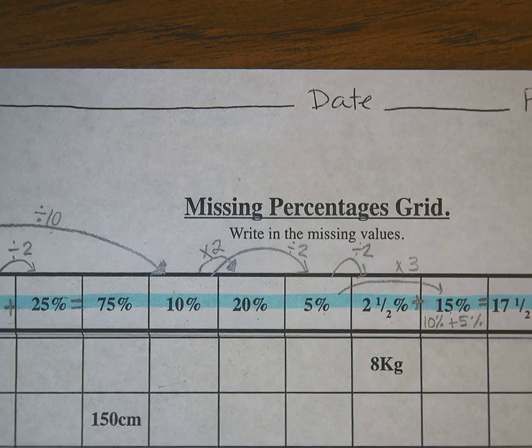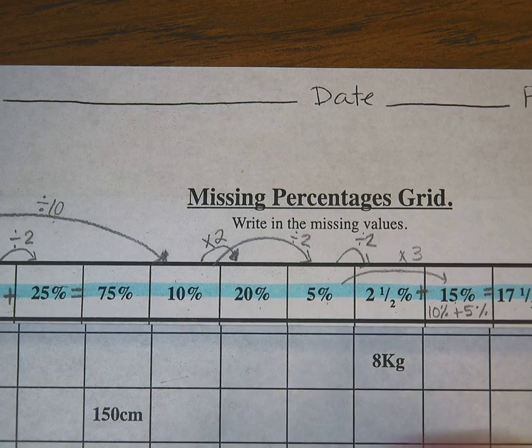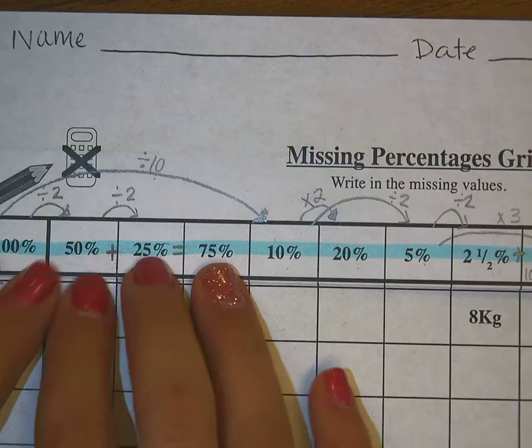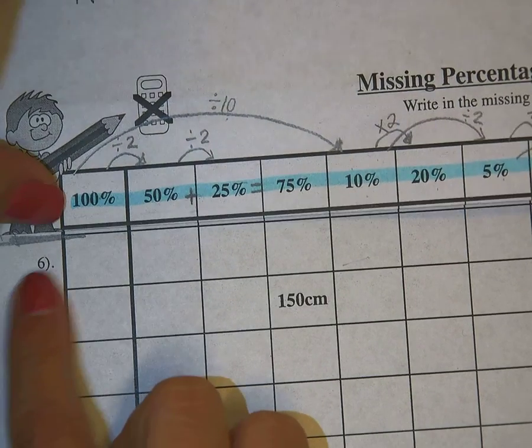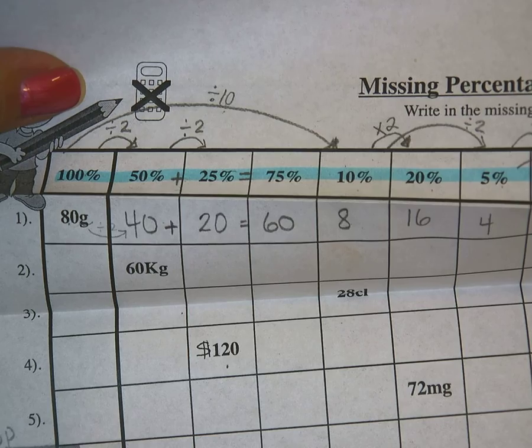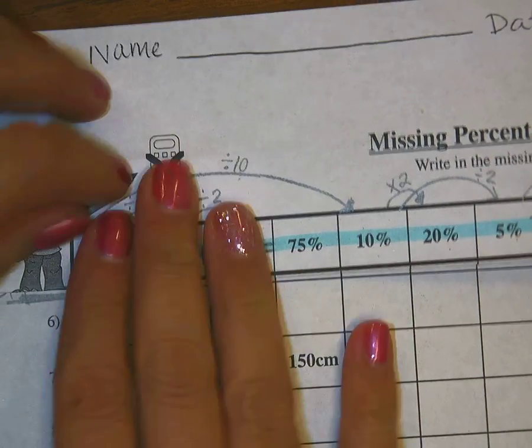So we're looking at this missing percentages grid, and it's basically just using shortcuts, or what we know about a scale factor, to figure out different percents of numbers. I'm skipping to number 6, and I just folded my paper so that it was an easy thing to look at.